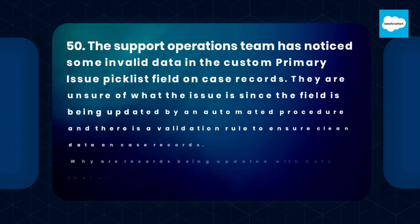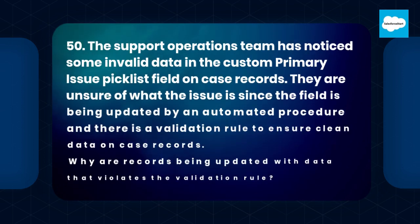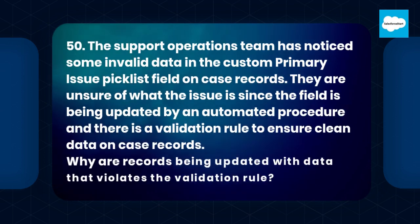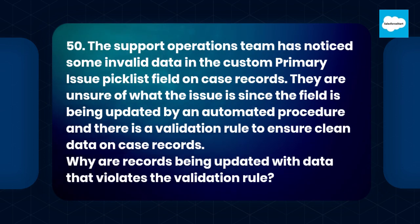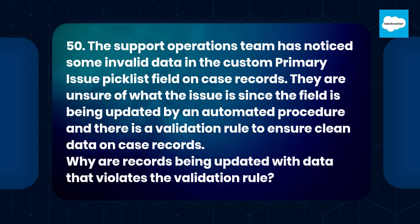Question 50. The support operations team has noticed some invalid data in the custom primary issue picklist field on case records. They are unsure of what the issue is since the field is being updated by an automated procedure and there is a validation rule to ensure clean data on case records. Why are records being updated with data that violates the validation rule?